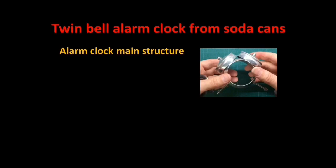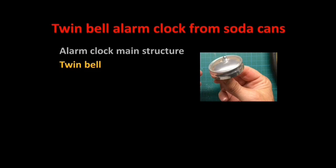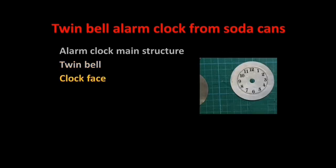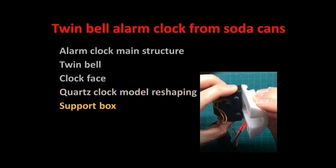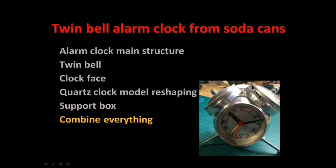This video about the twin bell alarm clock from soda cans is organized in a way that I first show you how to make the main structure. Then we come to the preparation of the twin bells and furthermore I give some explanations how to make the clock face with inkjet transfer paper. Additionally I will show you how to modify the quartz clock module by gluing the buzzer onto the outside of the module and then how to add the external battery box. The support box has to be glued onto the quartz clock module so it fits into the main structure. And in the last chapter all components are combined to create the final product.